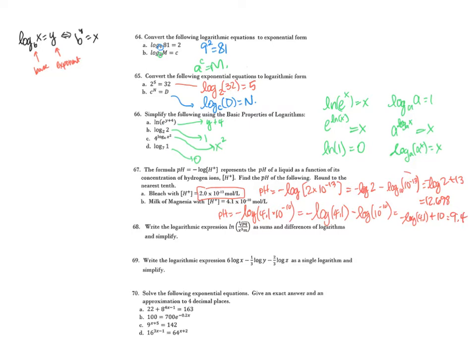Write the logarithmic expression as sums and differences of logarithms and simplify. We can break it up into parts: the natural log of P times Q to the one-fourth minus the natural log of x cubed times M. That equals one-fourth times the natural log of PQ, minus 3 times the natural log of x, minus the natural log of M.